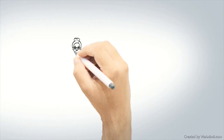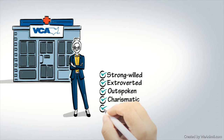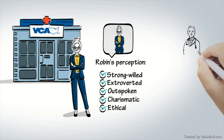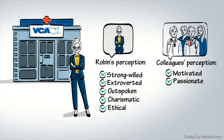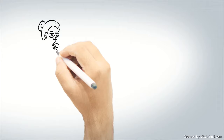Meet Robin. Robin is a manager of a veterinary practice. She's strong-willed, extroverted, outspoken, charismatic, and ethical — at least that's how she describes herself. Her colleagues would describe her as motivated, passionate, and strong-willed, but also as dominant, a poor listener, and a bit of a know-it-all.